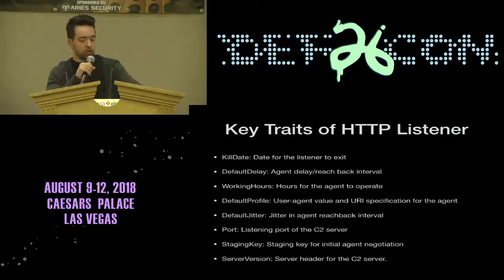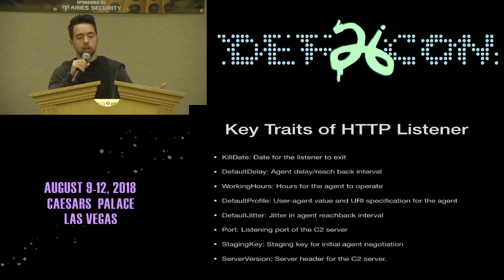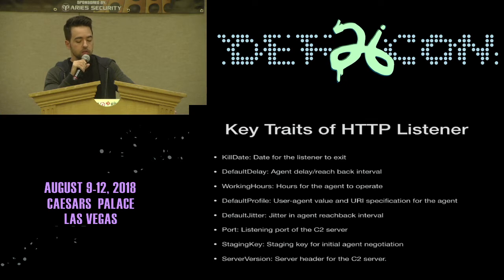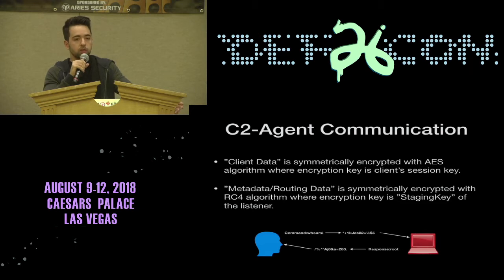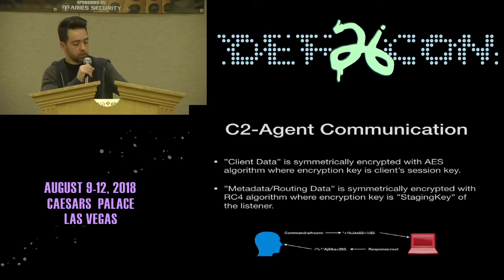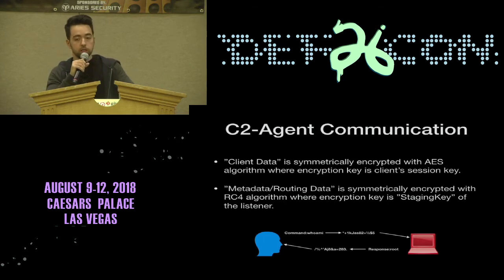Even though HTTPS encrypts all communication, we will assume there is a solution on the network which intercepts and decrypts TLS communication. Because of that, the HTTP listener will be our main focus. There are different traits of this HTTP listener, as you can see on the slide — we will see how these traits affect our visibility on the network in upcoming slides. The HTTP listener provides encrypted communication even without a TLS connection. This encryption is done in two parts: client data — including commands to be executed and their output — is encrypted symmetrically with AES. Metadata routing data is encrypted with RC4. We will consider these encrypted payloads are not decryptable on the fly, since there is no publicly known product with man-in-the-middle capability for Empire's communication.